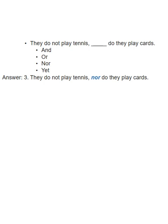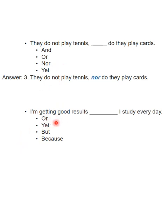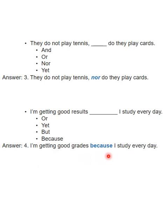پانچواں سوال: 'I am getting good results ___ I study everyday.' — Answer: 'because' — 'I am getting good results because I study everyday.' Conjunction clear ہو گیا! آپ اس کو ایک دو تین دفعہ دیکھیں، دوبارہ ویڈیو دیکھیں۔ پھر بھی نہ سمجھ آئے تو مجھے comment میں بتائیں، میں دوبارہ سمجھاؤں گا۔ مگر آپ نے خود بھی practice کرنی ہے۔ اللہ حافظ — ہماری ویڈیوز پسند آئیں تو like کریں اور اپنے friends کو بتائیں۔